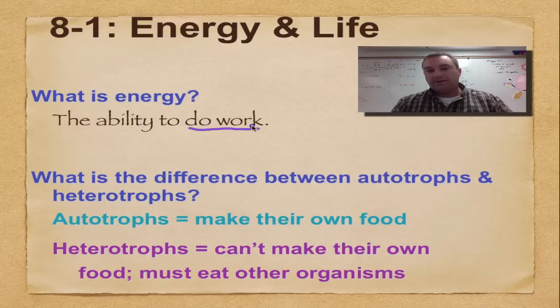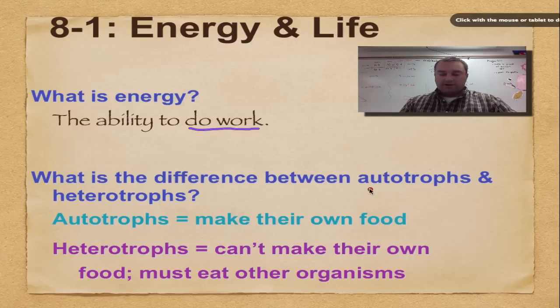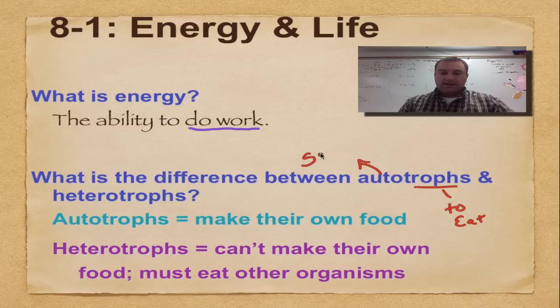Now living things come in two forms, and it depends on how they obtain energy to do their work. They're called autotrophs and heterotrophs. Auto basically means the same, and troph means to eat.